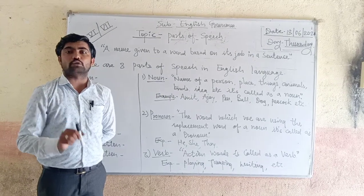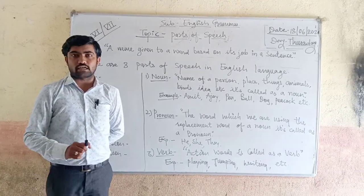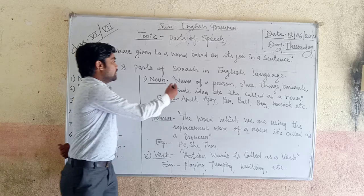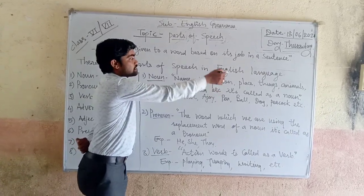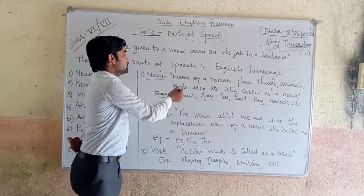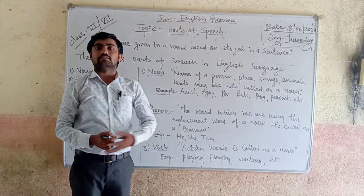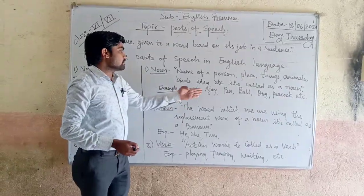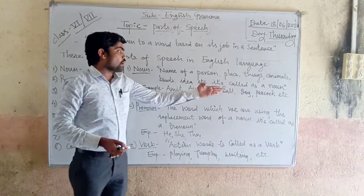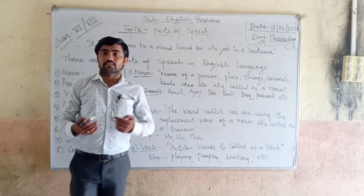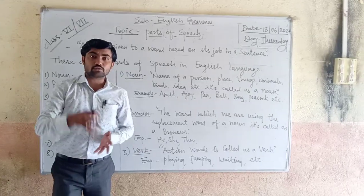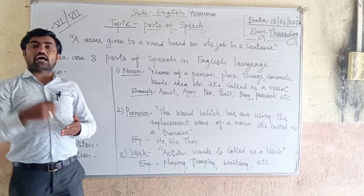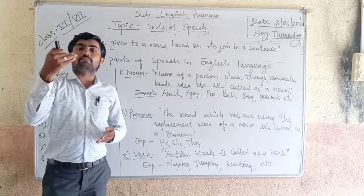For example: Amida, jug, pen, bone, dog, pickup, etc. This is the most important point. It is called a noun. Family and family members are also nouns.